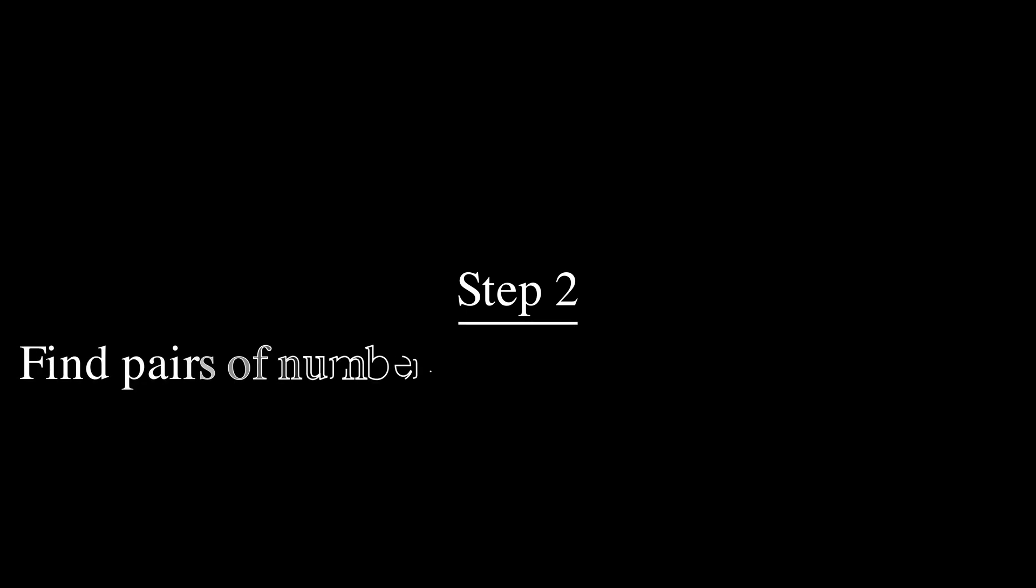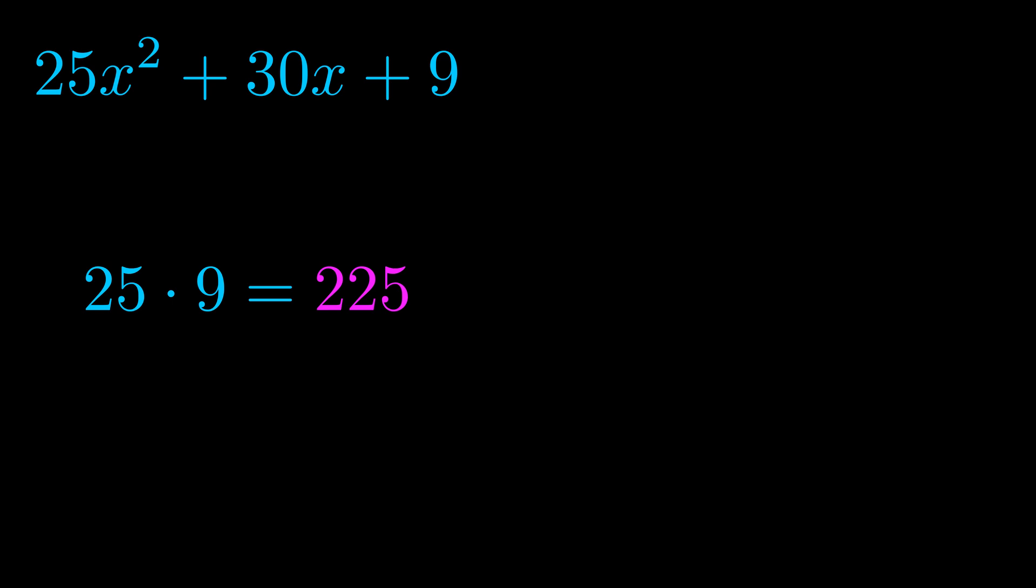Step two is to try to find all of the pairs which multiply to this number. Now it turns out you don't really need to find all of them but go ahead and write down as many numbers as you can that multiply to the magenta value for now. Pause the video and resume when you're ready to continue.